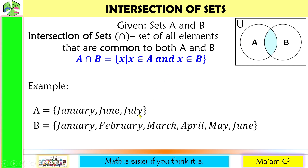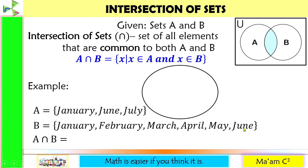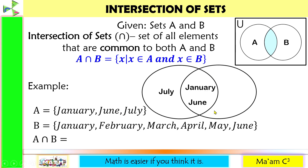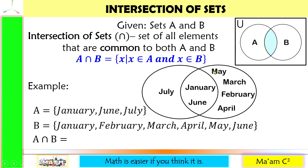Let us have our example again. This time we're going to look for A intersection B, the common elements. Draw a diagram for set A and a diagram for set B. Look for the common elements: January and June. Put them in the overlapping region, then add the remaining element of A — July — and the remaining elements of B — February, March, April, and May. So the intersection of set A and B are their common elements: January and June.